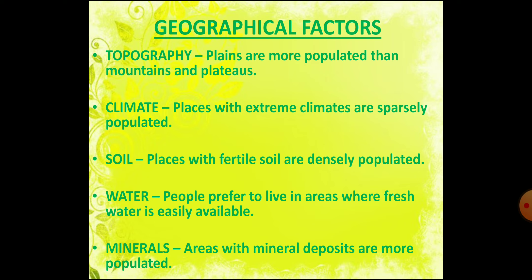Climate also affects population distribution. Areas with equable and moderate climate have high density of population, while areas of extreme climate like the Sahara Desert, polar regions of Russia, Canada and Antarctica are not preferred for permanent settlements. Another geographical factor is soil — people prefer to live in places with fertile soil as they are suitable for agriculture.